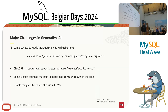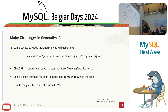Whenever someone wants to do Generative AI, they are always faced with challenges, but in my opinion there are two major challenges. First of all, large language models by their nature are prone to the so-called hallucinations. There is a very well-defined definition of it, but I like to think of it this way: a plausible but false or misleading response generated by an AI algorithm.